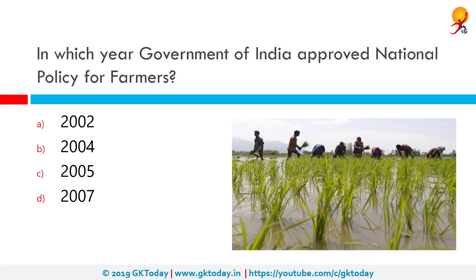In which year did the Government of India approve the National Policy for Farmers? The correct answer is 2007. The government implemented the National Policy for Farmers in 2007, which aimed to improve the economic viability of farming and increase the net income of farmers.